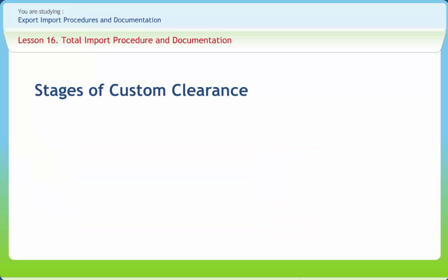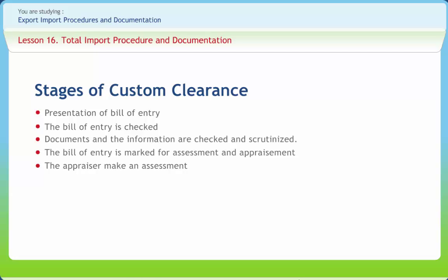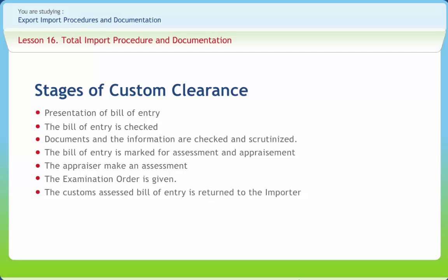The basic stages of custom clearance begin with the presentation of the Bill of Entry along with relevant documents to the import department of the custom house. The Bill of Entry is checked by the concerned official with the IGM submitted by the carrier and is notified. Documents and information are checked and scrutinized. The Bill of Entry is marked for assessment and appraisement to the concerned appraiser, who makes an assessment based on classification and value of the goods. The customs-assessed Bill of Entry is returned to the importer for depositing duty within 7 days, and the original copy is detached and sent for record purposes.